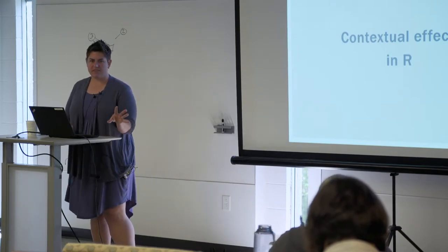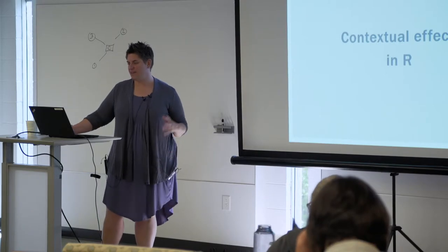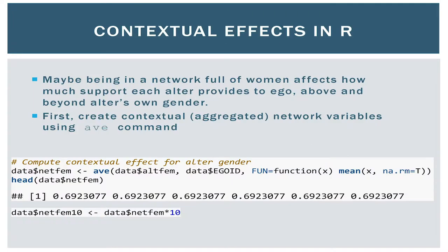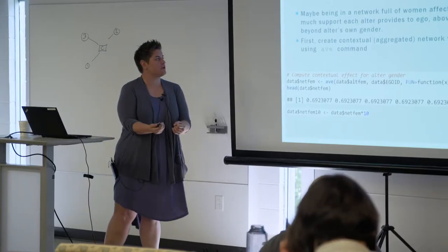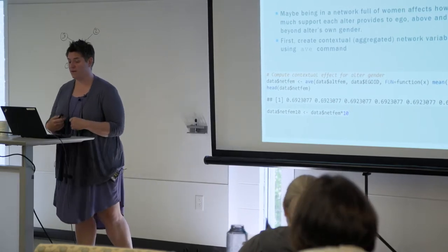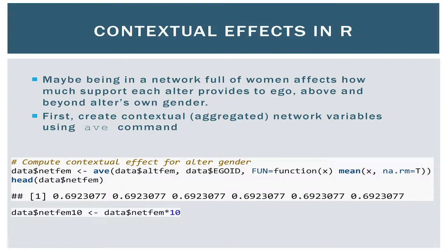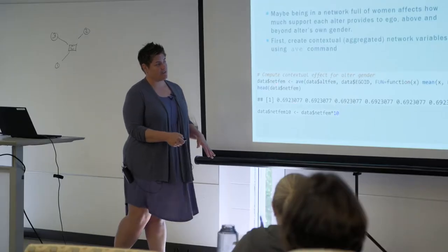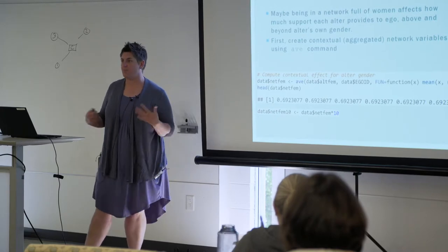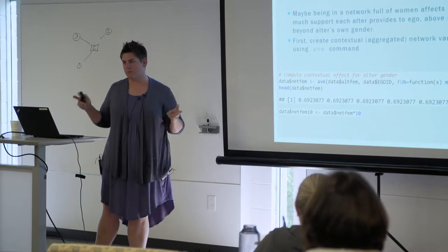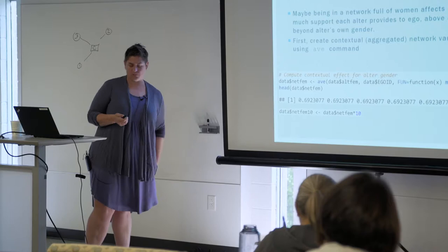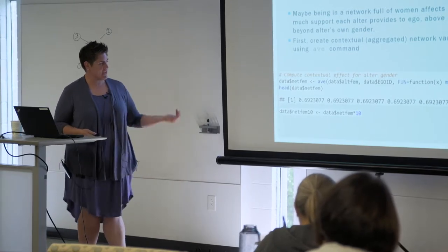So we're going to do the same thing. The next model adds a contextual effect in R. It could be that being in a network full of women affects how much support each individual alter provides over and above their own gender. The way you do this is you first create a contextual or aggregated network variable using the AVE command. These tools in R are really useful for creating aggregated variables even in standard regression. The function here is the mean, but you can use other functions like maximum, minimum, or standard deviation. For a contextual effect, we typically just want the average. The new variable is called netfem.